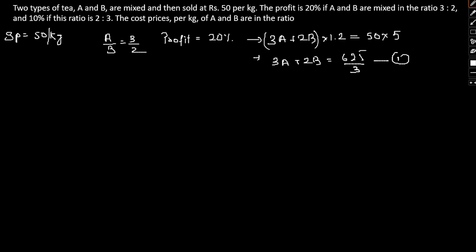In the second case, A is to B is in the ratio 2:3, and profit is 10 percent. Using these conditions, I can write 2A plus 3B times 1.1 equal to SP, which is 50 times 5. This can be written as 2A plus 3B equal to 2500 by 11. Let this be equation 2.